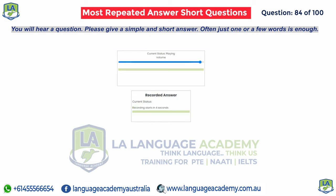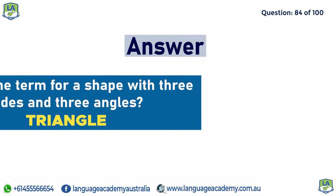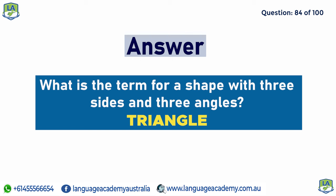What is the term for a shape with three sides and three angles? Triangle.